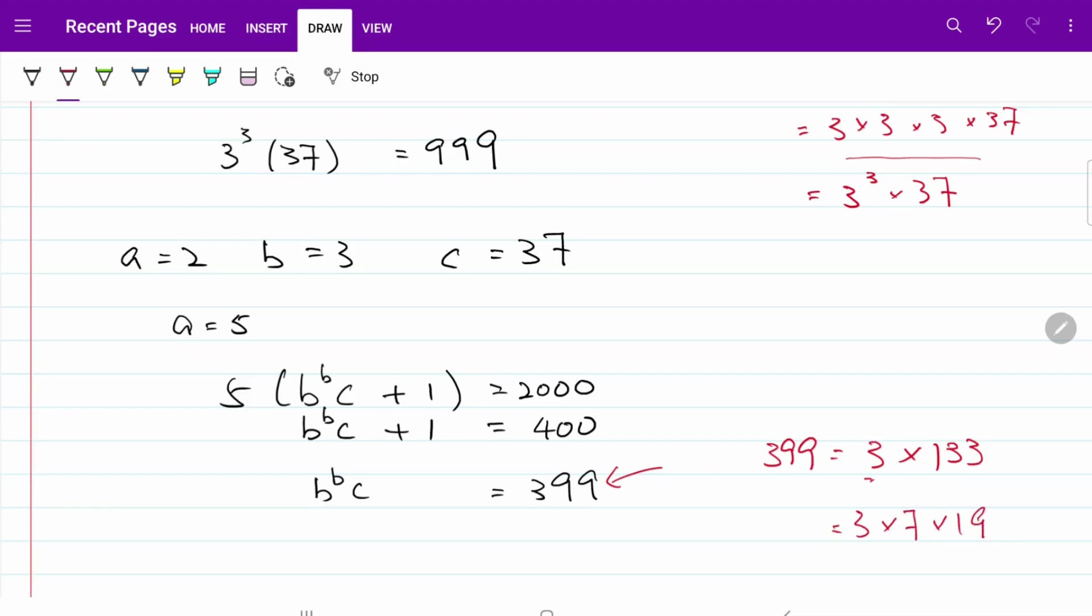If we consider all three numbers, all three of them are prime, meaning none of them will fit into the format of b to the power of b. So in other words, for the second scenario, we don't have a feasible answer. So a equal to 5 will be rejected.